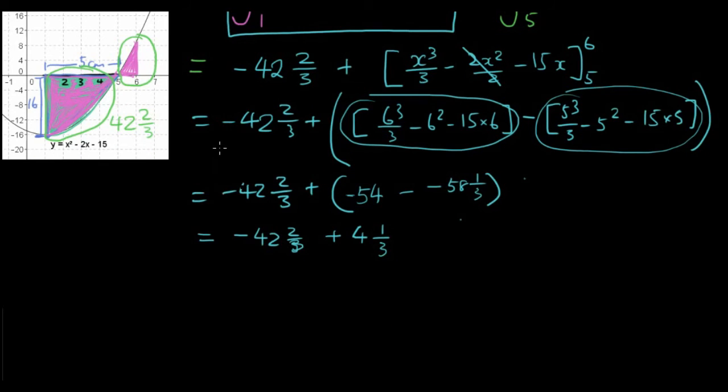So let's use the graph again to find out what is happening. What we found is again the area below the curve, below the x-axis, is 42⅔. The area above the x-axis is 4⅓. So this area here in pink is 4⅓ unit squared. So now we are going to add these two numbers together.